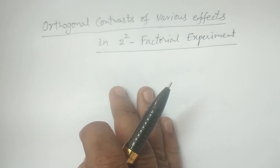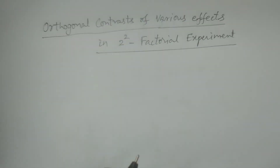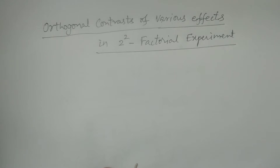The reason we check contrast first is that the orthogonal contrast definition requires that they must first be contrasts. Only if they are contrasts can they potentially be orthogonal contrasts; otherwise, not.